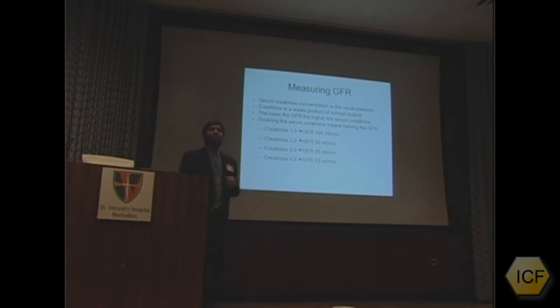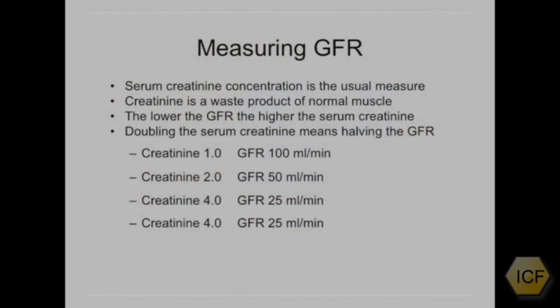There's 1440 minutes in a day, so there's 144 liters of plasma filtered every day if your kidney function is completely normal. If your creatinine is at 2, it means that your GFR is now about half, about 50 milliliters per minute.